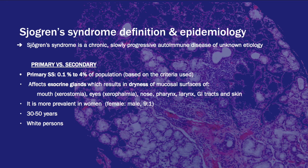Sjögren's Syndrome is a chronic, slowly progressive, autoimmune disease of unknown etiology. It's either primary or secondary. Primary Sjögren's Syndrome, which occurs without other autoimmune conditions, affects 0.1% to 4% of the population based on the criteria used. It mainly affects the exocrine glands, resulting in dryness in the mucosal surfaces of the mouth, eyes, nose, pharynx, larynx, and GI tracts, as well as skin. It's more prevalent in women — 9 women to 1 man — and more common in the 30 to 50 age group, and more common in the white population.